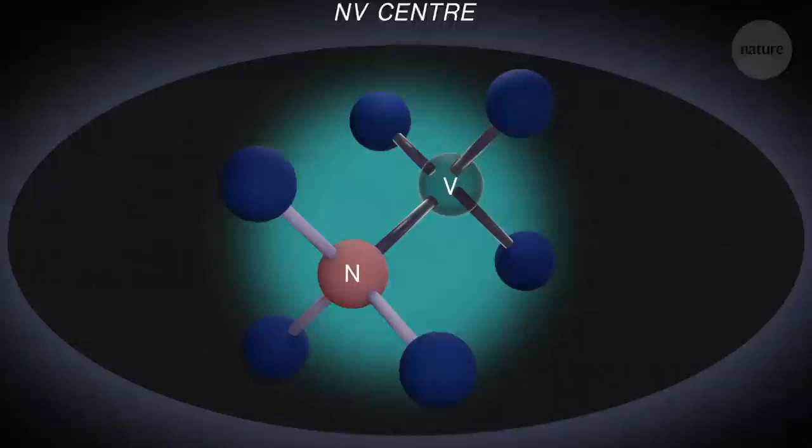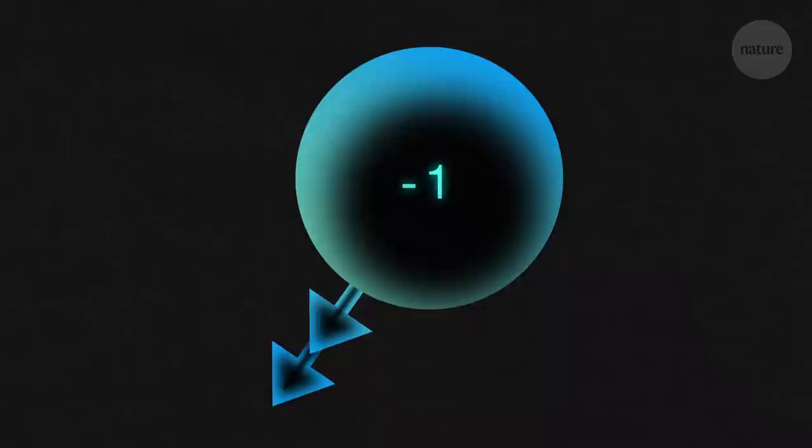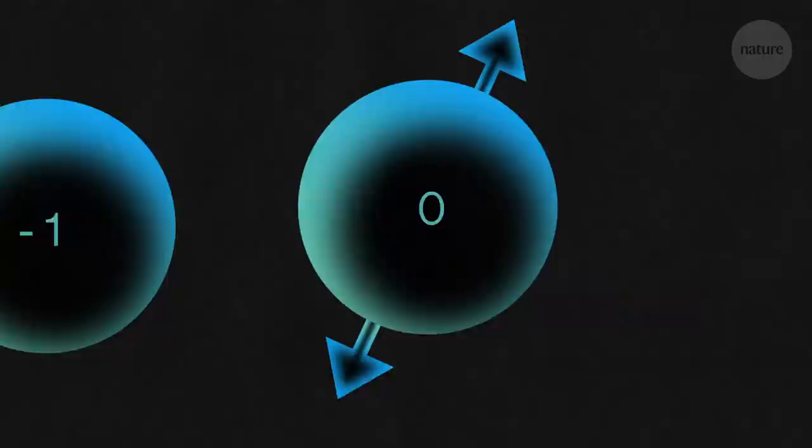This center has a physical property called spin. The NV's spin is like two tiny compass needles. They either both point up, giving a spin of +1, both down, spin -1, or when one is up and one is down, spin 0.